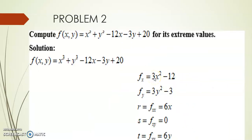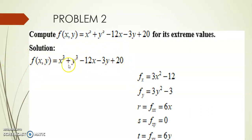Problem 2: find the extreme values of f(x,y) = x³ + y³ - 12x - 3y + 20. Extreme values mean we check whether the points are maximum, minimum, or saddle points. We write down the given function as f(x,y) because we have x and y variables involved.